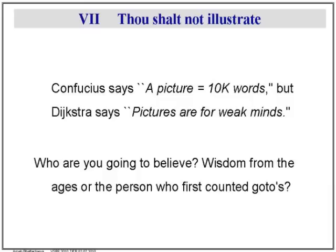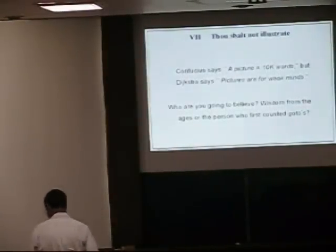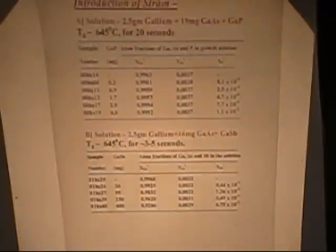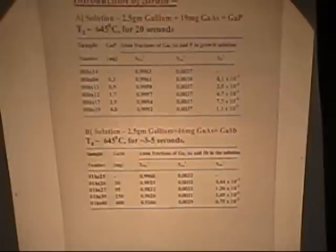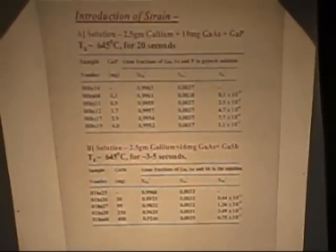Thou shalt not illustrate. Confucius — this is a computer science example, Patterson being a computer science teacher — says a picture is worth a thousand words. But Leighton, some algorithm expert, says that pictures are for weak minds, so code is good. Who am I going to believe? Sometimes it's very obvious — if I can show you data, data is the most important thing. This is raw data. As I increase the amount of gallium phosphide, you can clearly see how the percentage of phosphorous goes up. That is clearly seen, and you get the same information whether you look at X-ray results or laser results. That is exactly the same data. So that's the difference between pictures and graphs — pictures are for weak minds.